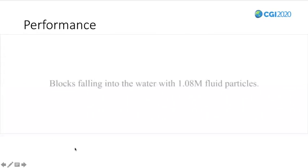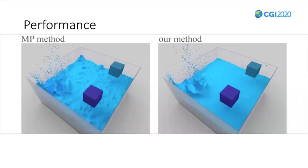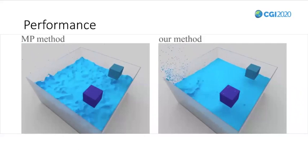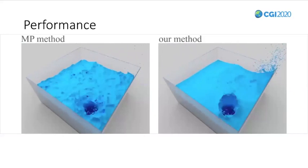This is the second experiment, blocks falling into the water with 1 million particles. The left one is the simulation result using MP method, and the right one is the simulation result using our method. There are some unreasonable motions in MP method.